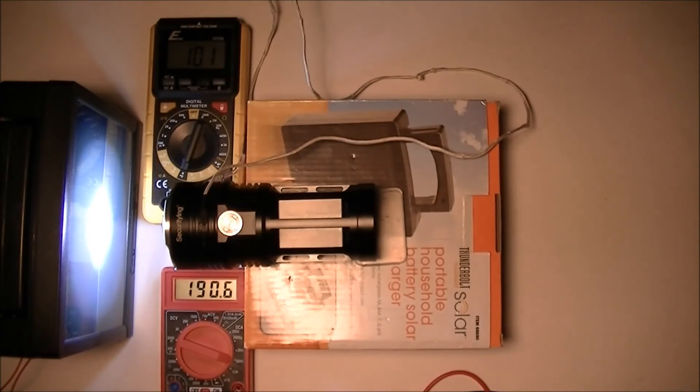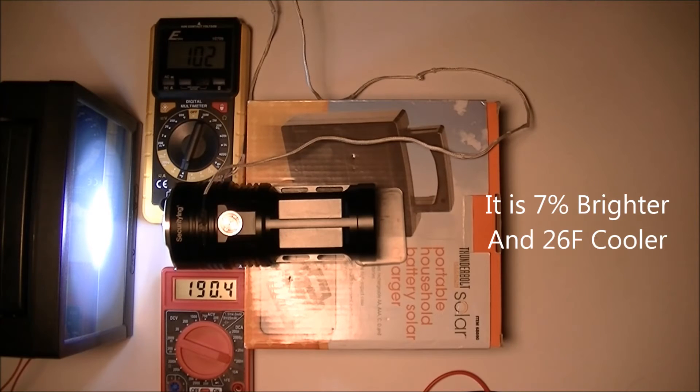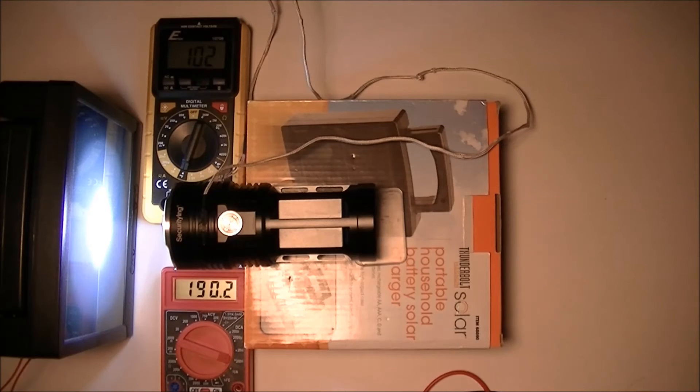Alright, we're into 8 minutes, one of the first milestones on the other flashlight. At this point we're at 128 Fahrenheit and 176 milliamps on the other flashlight. On this flashlight we're at 102 Fahrenheit and 190.4 milliamps. So we're getting more light at this point from this light, and a lower temperature. So it seems to be more efficient at this point than the other flashlight. I'll check in again in 2 minutes.